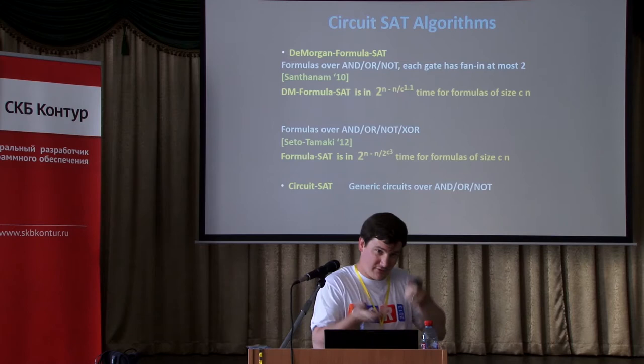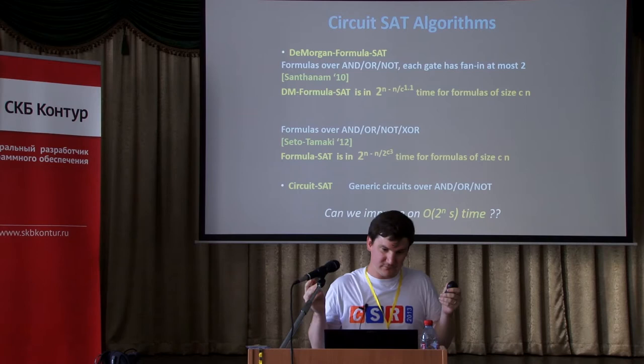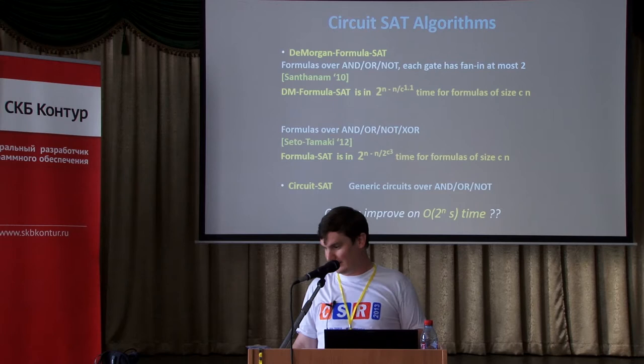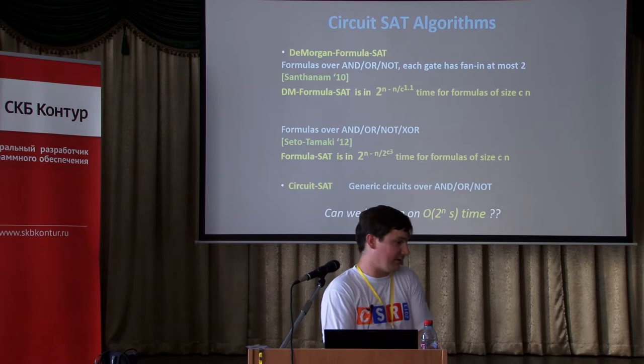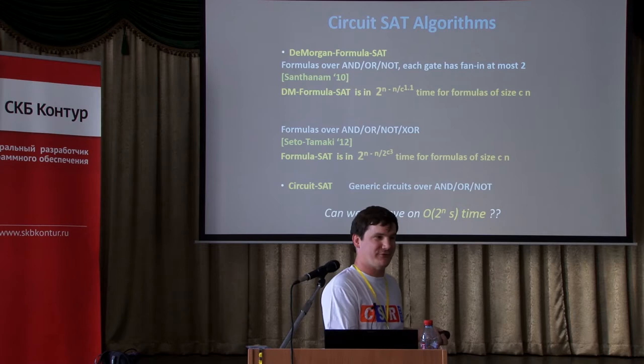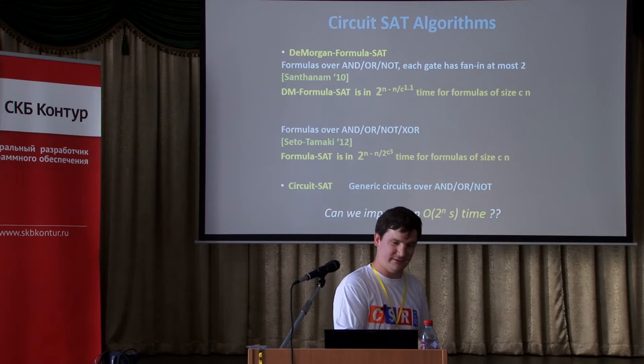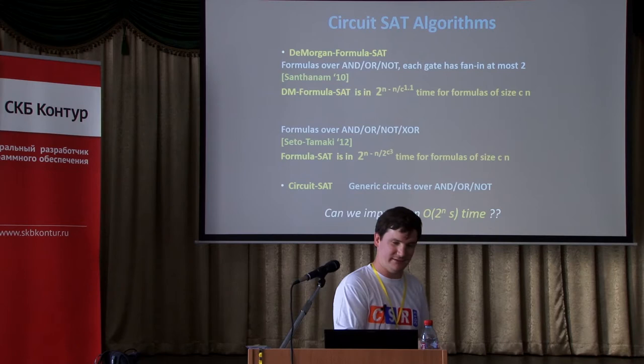Once you move up to generic circuit SAT — circuits over AND/OR/NOT of size S — it's completely wide open. The stupid algorithm of 2^n times S on a reasonable computation model is the best we know how to do. I would like to see just any progress on this whatsoever. Surely exhaustive search is not optimal. For circuits of size S with N inputs, 2^n times S is the best known.